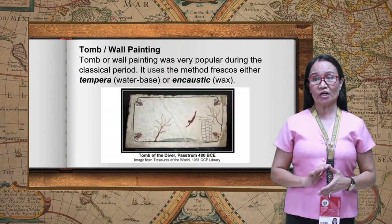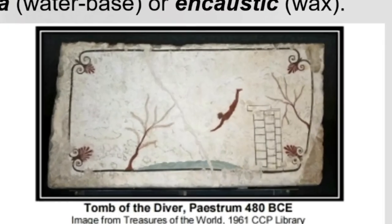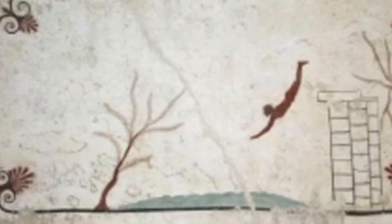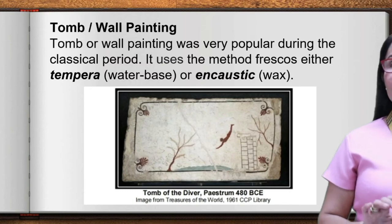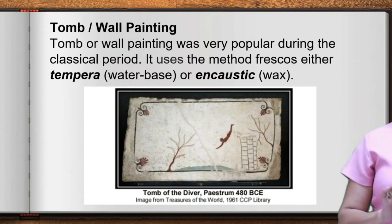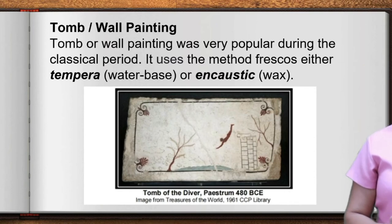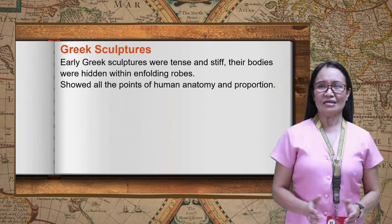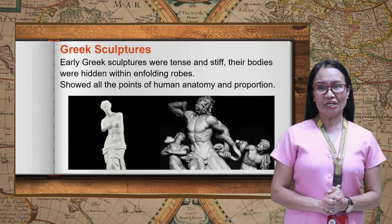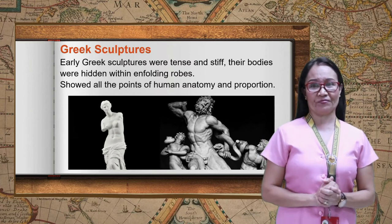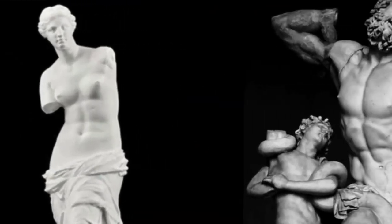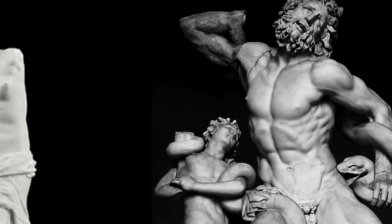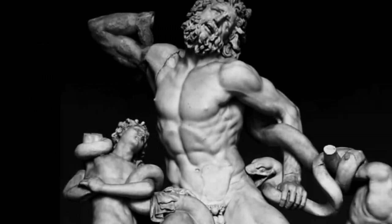Tomb or wall painting was very popular during the classical period, using fresco methods — either tempera or encaustic. It has a sharp, flatly outlined style of painting, and because it uses water-based materials, very few examples survive. Early Greek sculptors were tense and stiff, with figures hidden within unfolding robes. After three centuries of experimentation, Greek sculptors finally evolved to show all aspects of human anatomy and proportions.